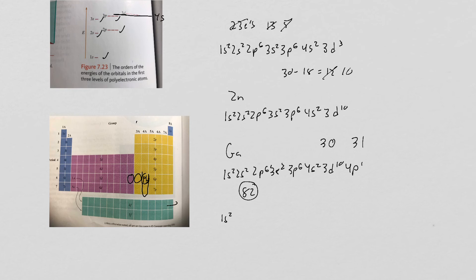I do the 1s2. That's down to 80. Now I go to 2s2. Now I go to 2p6. Now I go to 3s2. Now I go to 3p6. Next thing I go is 4s2. Next thing I go is to 3d10. Next thing I go is to 4p6. Next I go to 5s2.